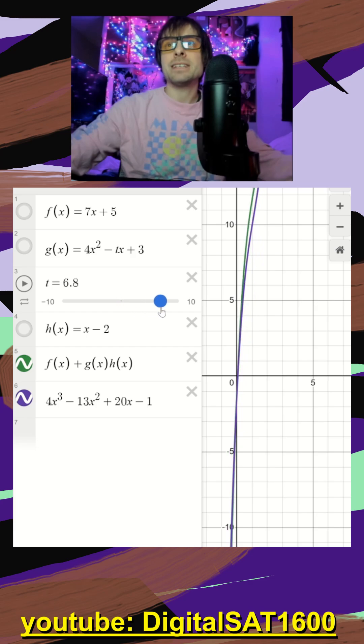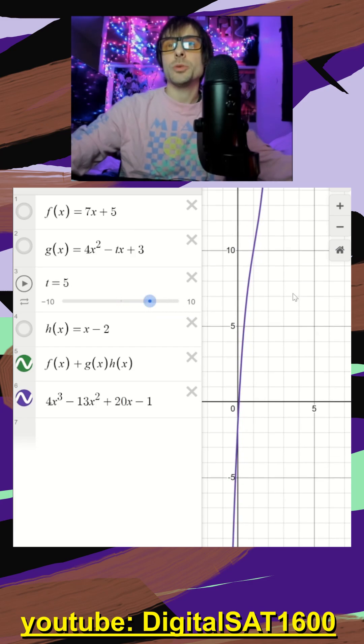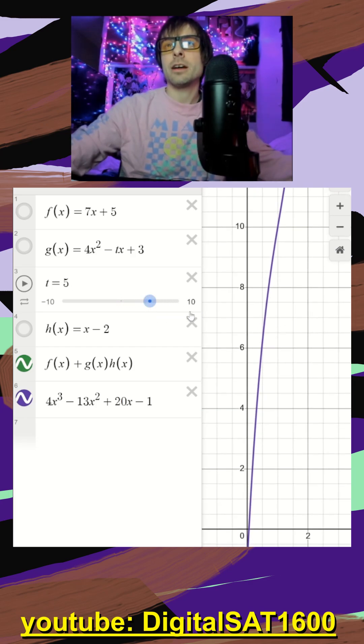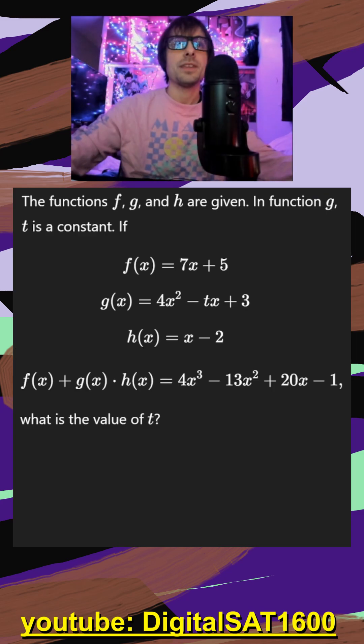And again, all I have to do is slide my t until it gets equal to it. So I kind of just did it a little luckily there. But all you have to do is go back and forth until it matches up with your line. And it's definitely overlapping. So it looks like our t value is going to be equal to five here.